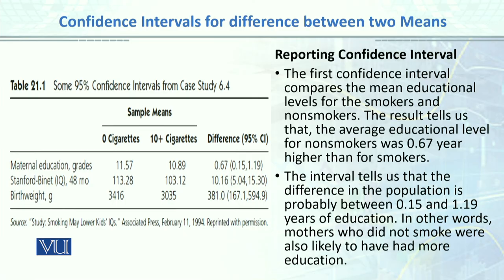This slide shows how we report confidence intervals. According to APA format, if we want to report them in papers, we give the sample difference and then the 95% confidence interval for each variable. For example, we looked at the difference between smokers (zero cigarettes) and non-smokers (ten cigarettes per day) on three variables: education and grades, IQ, and birth weight in grams.